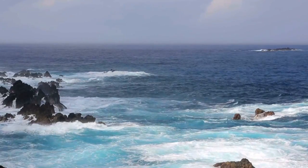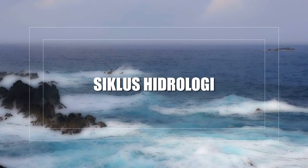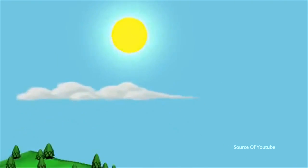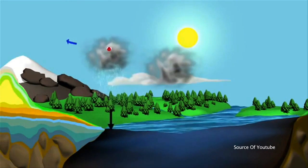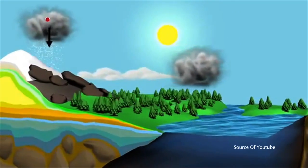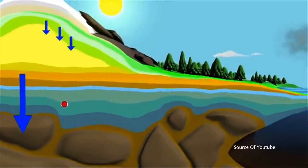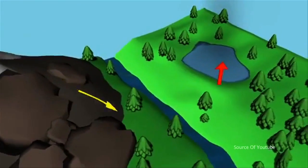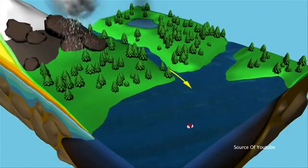Keberadaan air di alam selalu mengalami perputaran yang dikenal sebagai siklus hidrologi. Uap air di udara mengalami proses kondensasi membentuk awan yang nantinya turun menjadi air hujan, es, atau salju. Air yang jatuh ke permukaan bumi sebagian menguap lagi, sebagian meresap ke dalam tanah kemudian mengalir ke sungai, disebut sebagai limpasan atau interflow. Atau menjadi air tanah yang keluar menjadi mata air atau mengalir ke sungai yang lebih rendah, disebut sebagai ground water runoff.